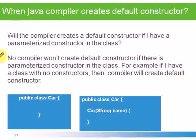For example, here we have two examples. See here in the first example, public class Car. Here we don't have any constructor in this class, so Java compiler creates a default constructor for this class.